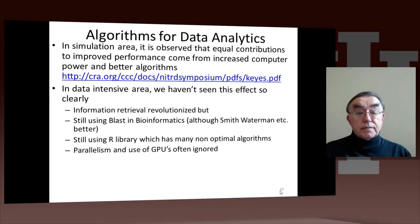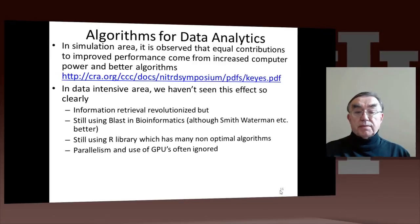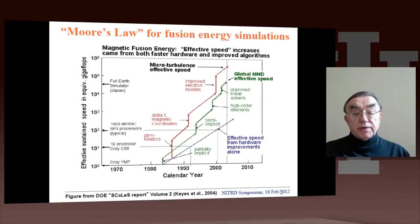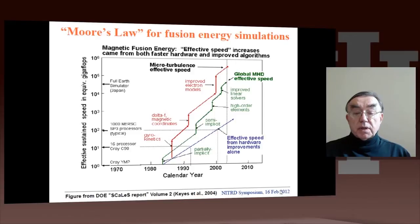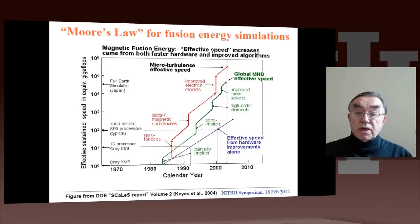If we look not at data science but at computational science — the area of simulation — we find that roughly equal contributions to overall performance came from computer power and algorithms. The reason we're able to do bigger simulations is due to more computer power, but equally due to better algorithms. This is illustrated on a slide from David Keyes, 2004. The blue line, from 1984 through 2004, shows improvement due to Moore's Law computer performance. The red and green lines show actual algorithmic performance gains from improved software technology — linear solvers, higher-order elements in the approximation scheme.